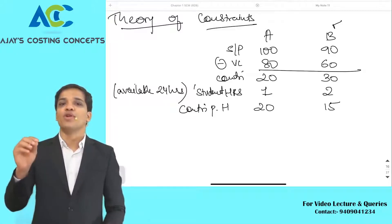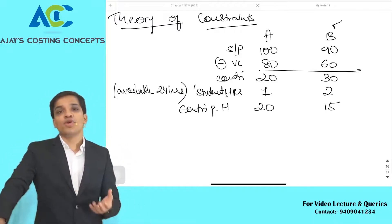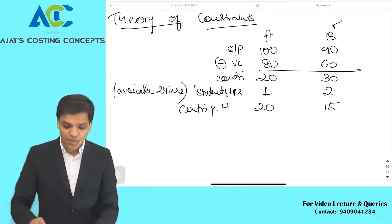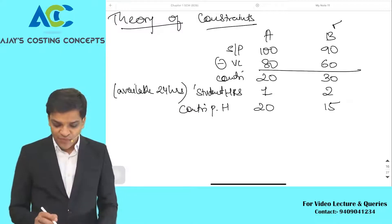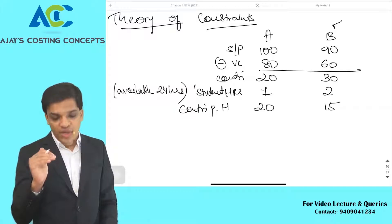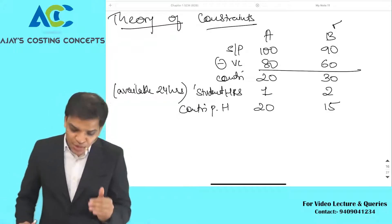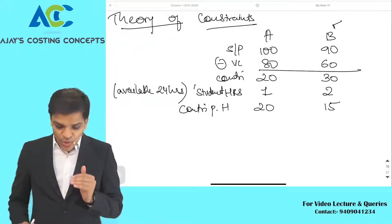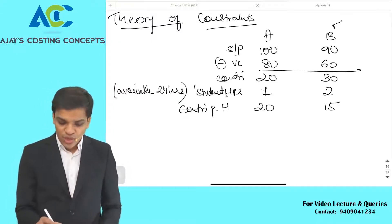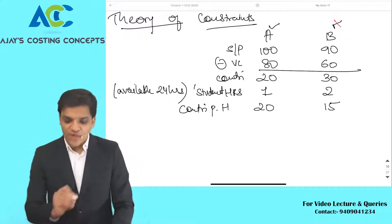If I manufacture 24 units of A, my contribution will be 24 into 20. I would not produce B because producing B requires two hours per unit. Before applying theory of constraints, looking at contribution per unit you feel B is more profitable, but when it comes to contribution per hour — 20 versus 15 — A should be produced. So B is cancelled and A is manufactured. This is known as theory of constraints.